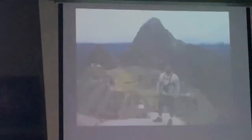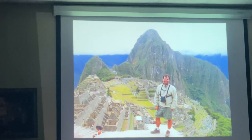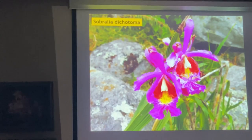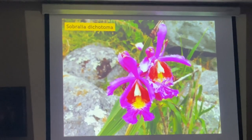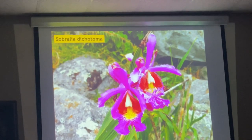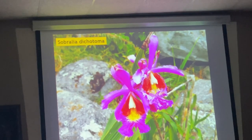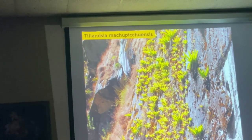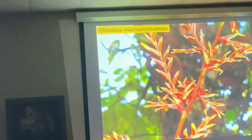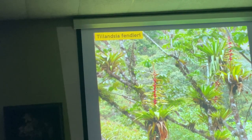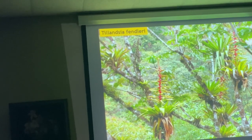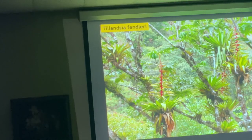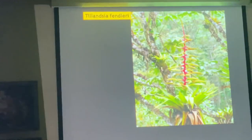This is a view from the Sun Gate, with Huayna Picchu in the back. Very nice Sobralias — very nice orchids. The Sobralias here have very nice colors; most Sobralias are usually whitish or pale pink, but these are very, very nice. When I go on the hike, I get to see this — a fairly recently described Tillandsia machu-picchuensis growing on the walls. Tillandsia fendlerii is very, very common when you take the train from Ollantaytambo to Aguas Calientes; you can spot these plants all over the trees from the train.